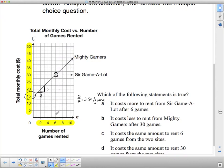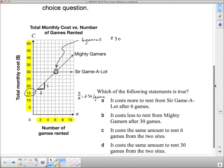So what is that point? That point is six games. At six games, there's something interesting happening here. It doesn't matter who you rent from because it's going to cost $30 no matter where you are. Let's have a look at the multiple choice questions now.